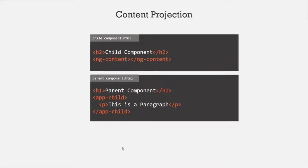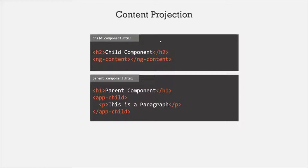We also learned about content projection. We project content from a parent component to a child component using the ng-content directive. Here we have this child-component.html, and inside it we have used this ng-content directive. Then, in the parent component, within the component selector, we have specified a paragraph element. When this HTML is rendered in the webpage, this paragraph will be projected in place of ng-content — and this is called content projection.